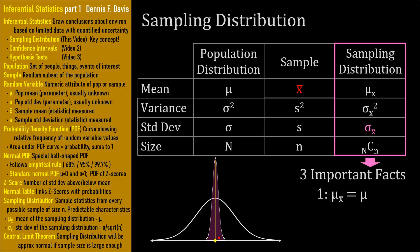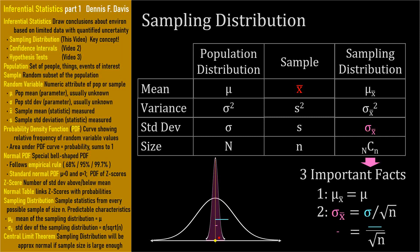The second fact is the standard deviation of the sampling distribution, sigma sub x-bar, will be equal to the population standard deviation divided by the square root of the sample size. This means sampling distribution PDFs will always be narrower than the PDF of the population from which they were drawn. The blue bar represents the population standard deviation sigma, and the pink bar represents sigma sub x-bar. The greater the sample size, the lower sigma sub x-bar will be, and so the narrower the sampling distribution.